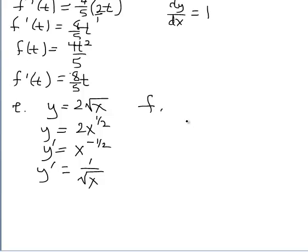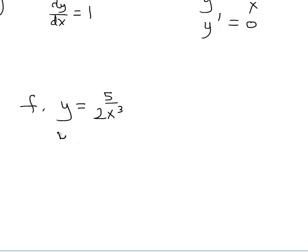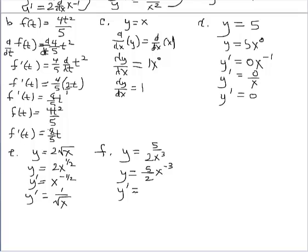Pay attention to notation — try not to get sloppy. Let's look at y equals 5 over 2x to the third. Studying this equation, we rewrite it as 5 halves x to the negative 3. That's much easier to differentiate. So y prime equals, by the power rule, negative 3 times 5 halves, which is negative 15 over 2, keep the base of x, reduce the exponent by 1 to negative 4. You could pull x to the denominator and express your answer that way.